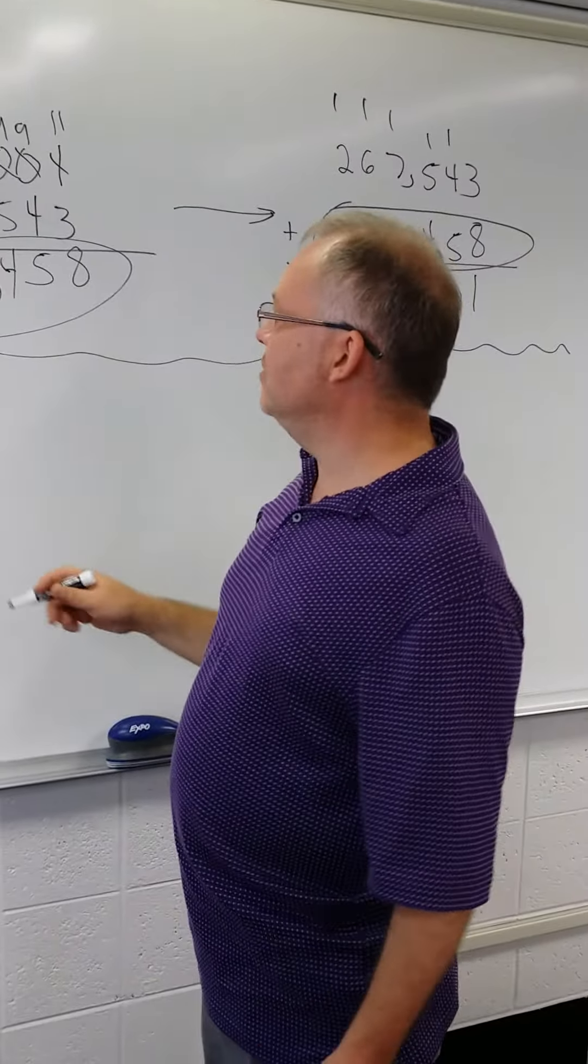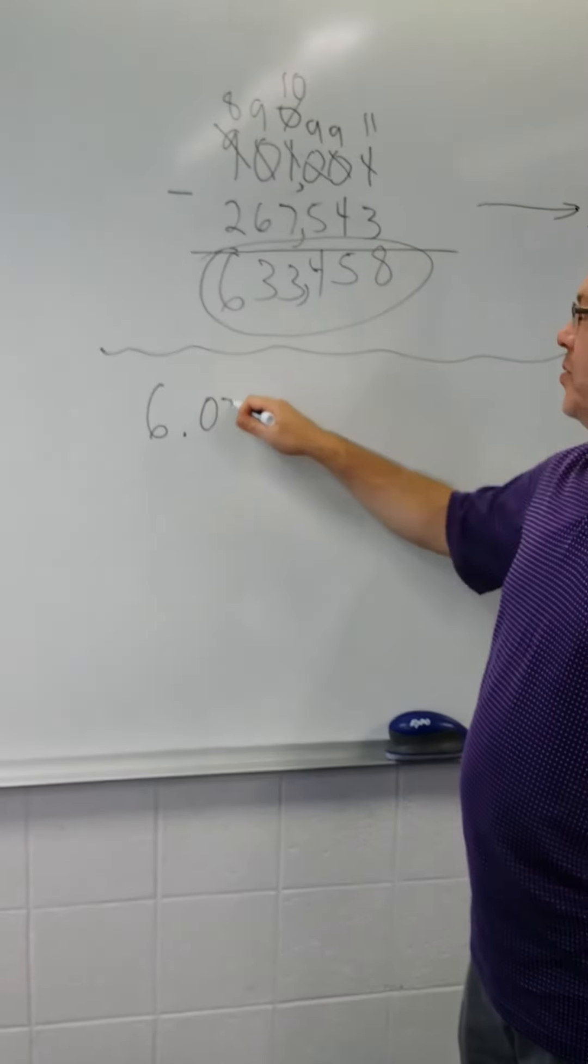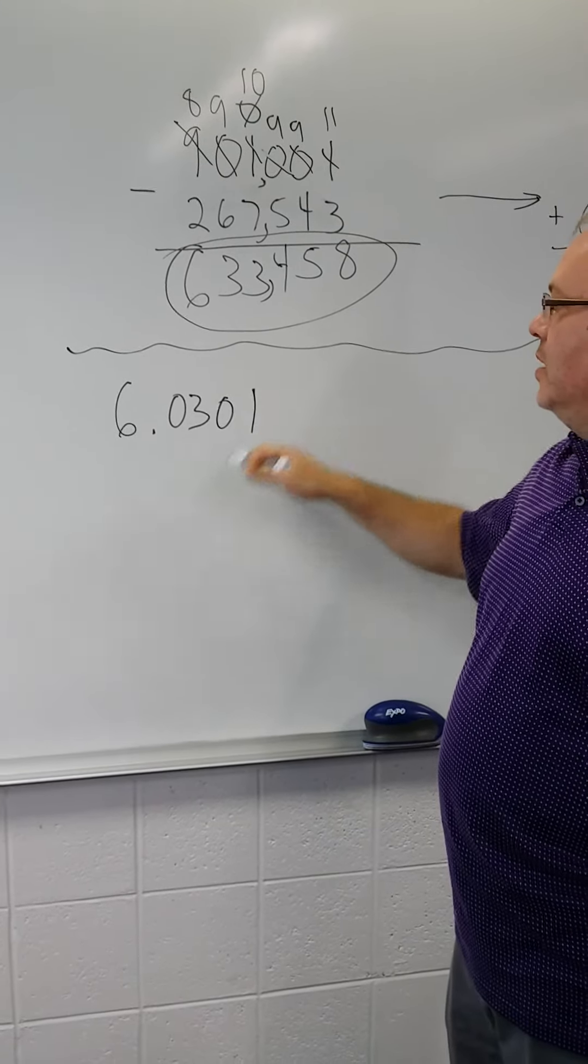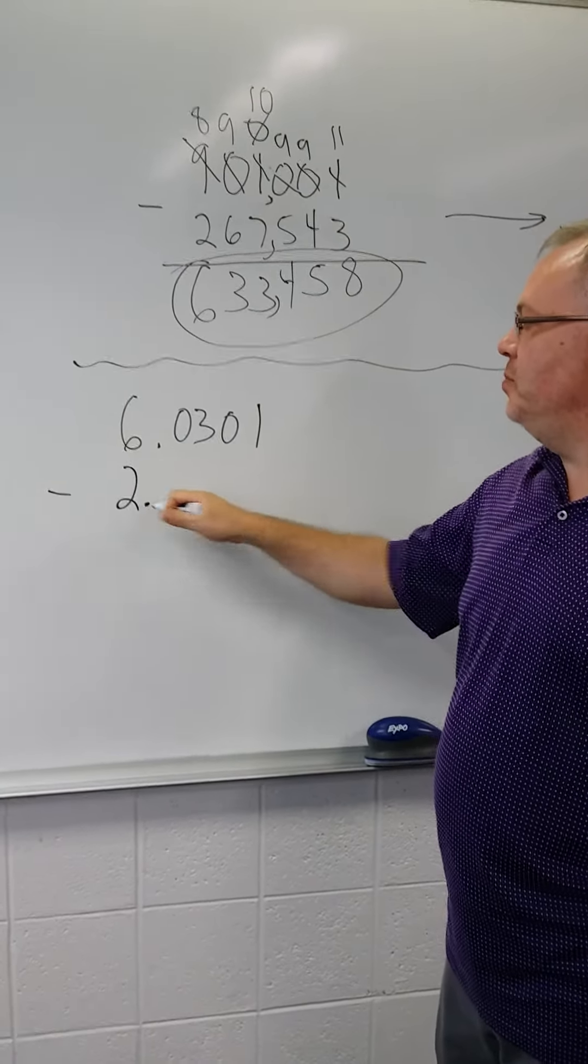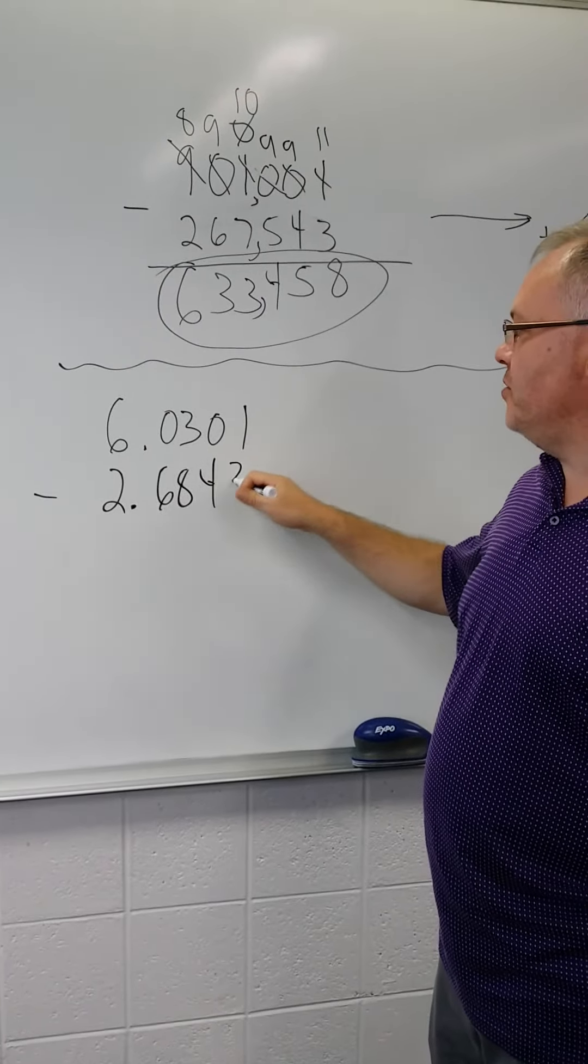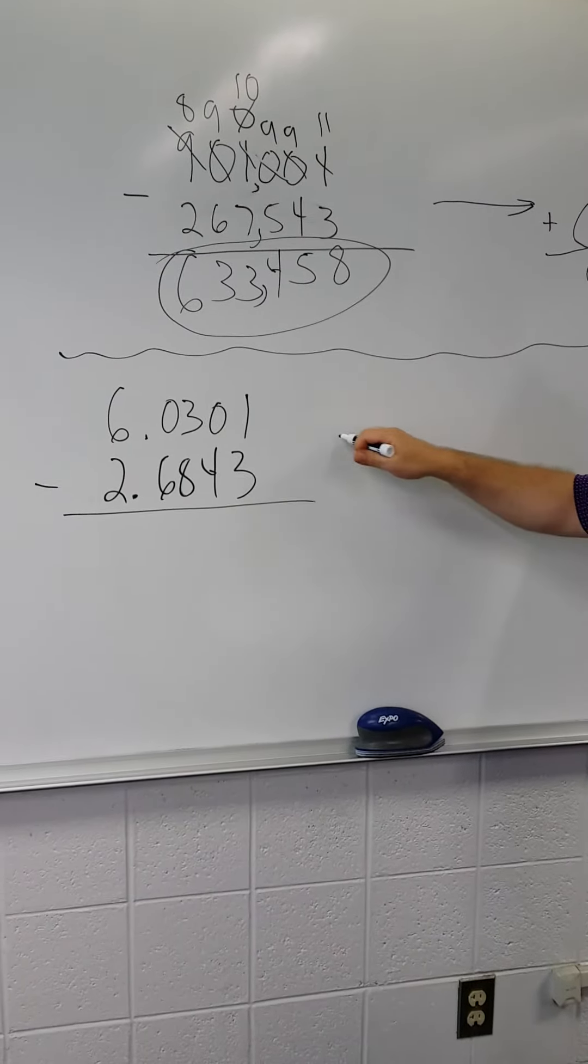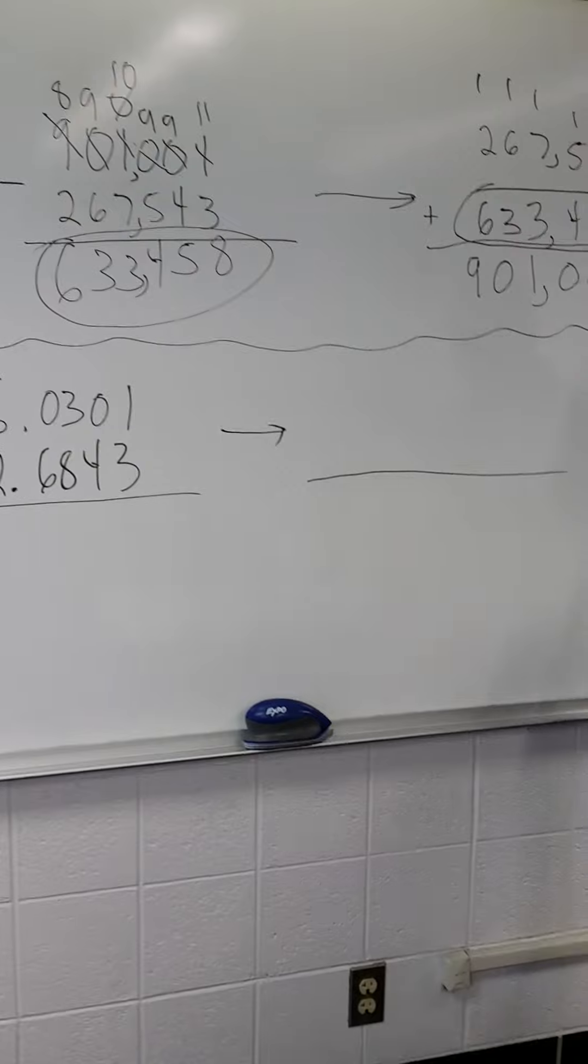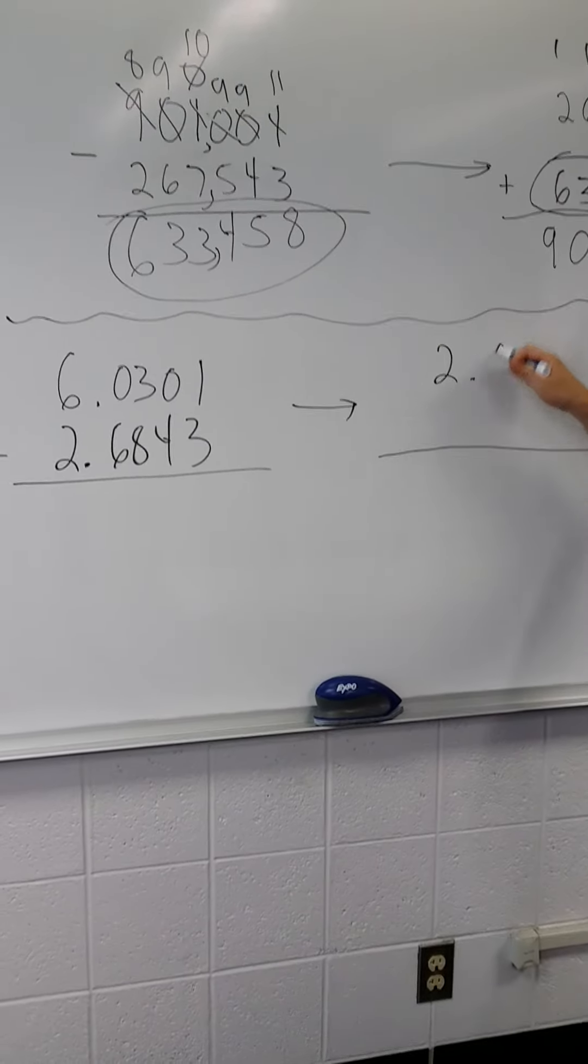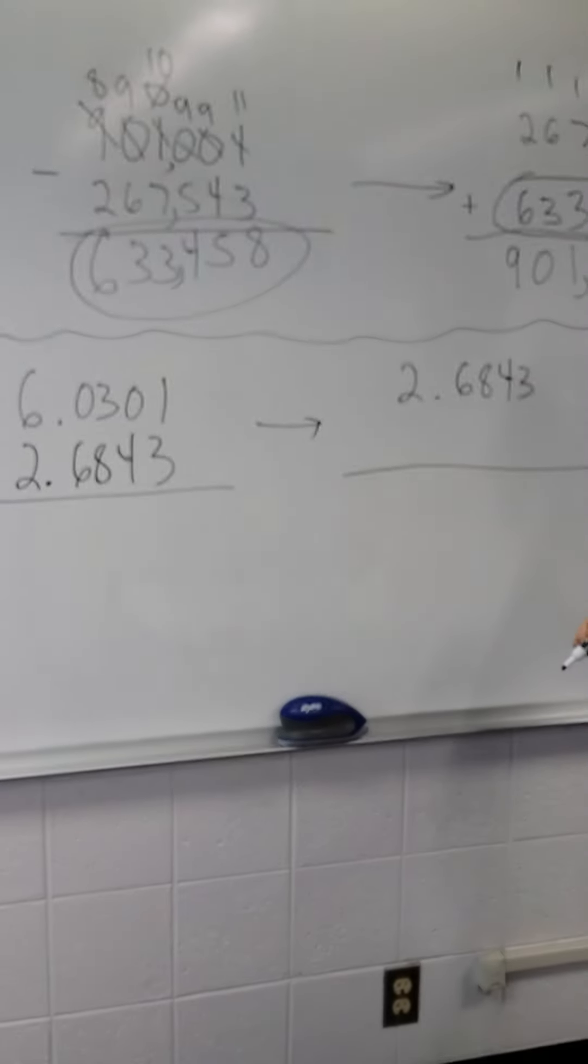So let's do 6.0301 minus 2.6843. Again, to avoid remembering how to borrow, again, what you're subtracting goes on top. What you're subtracting from goes on the bottom.